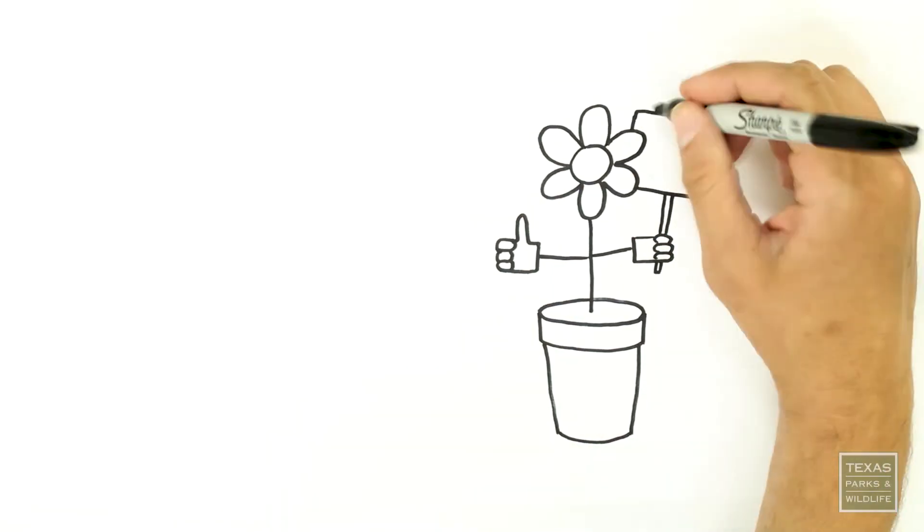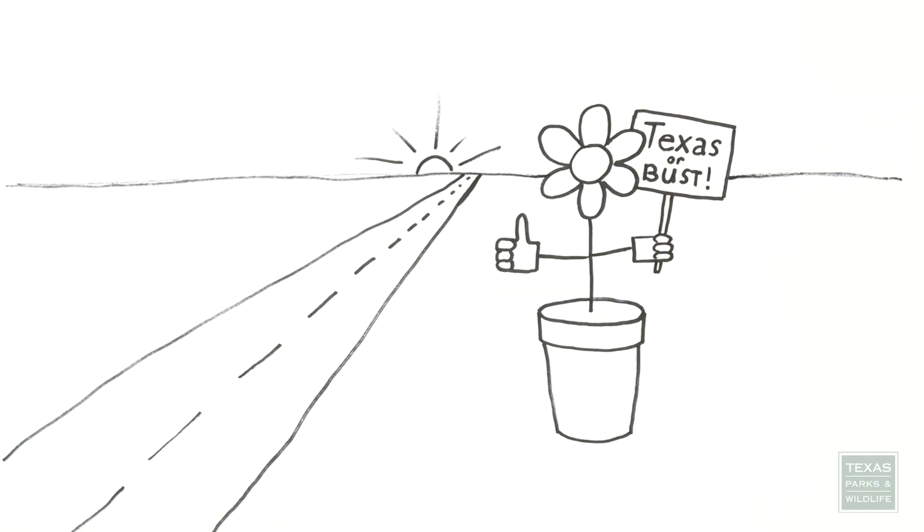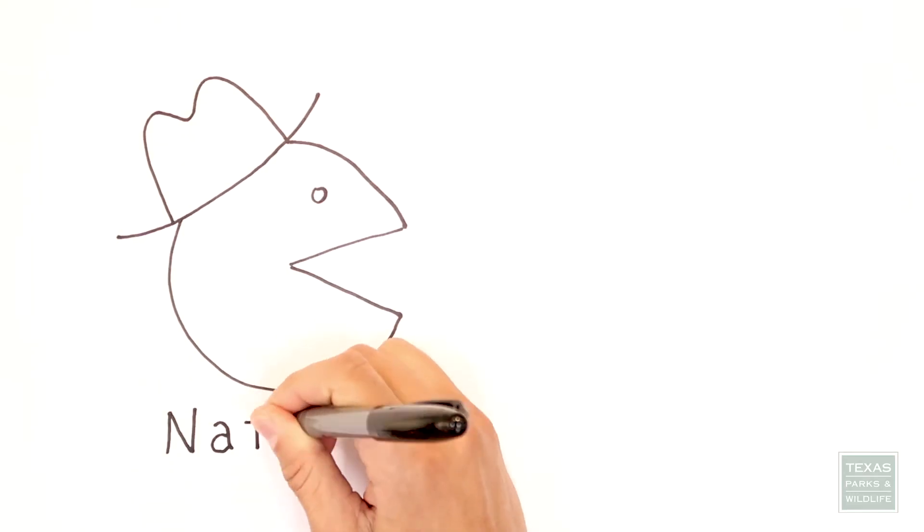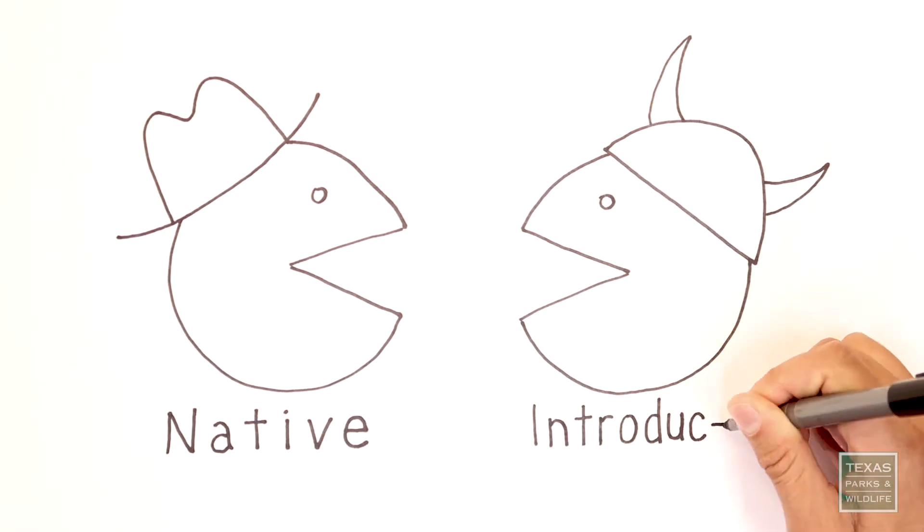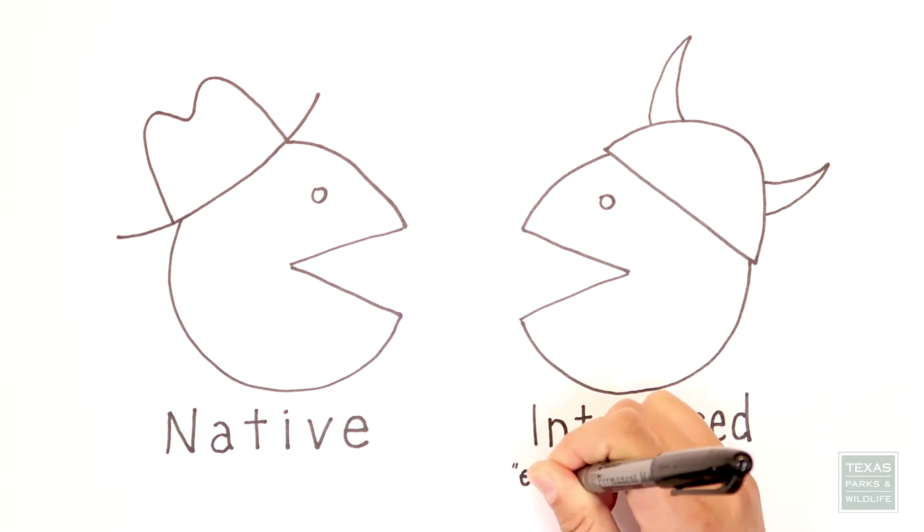But some species can live in other places too, but historically they haven't had a means to get from one place to another. When a plant or animal happens to get to a place where it has never been found before, we say it has been introduced to a new ecosystem. And the newcomers are called exotic, alien, or non-native species.